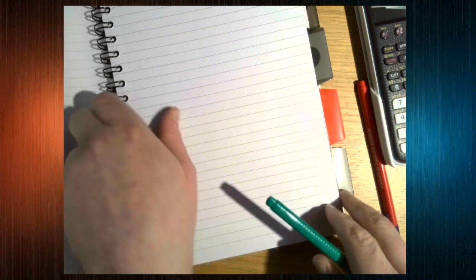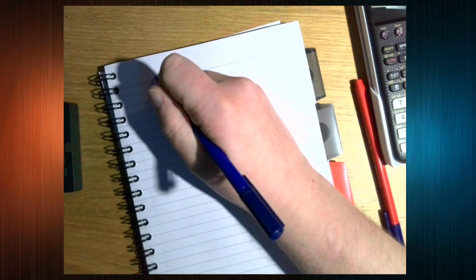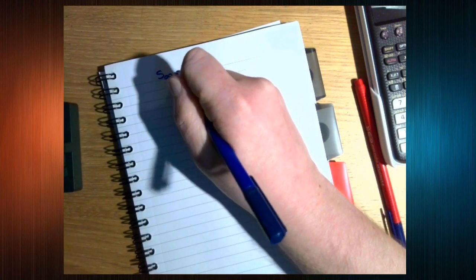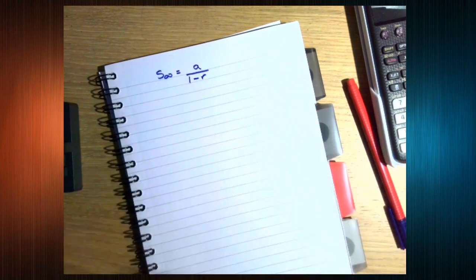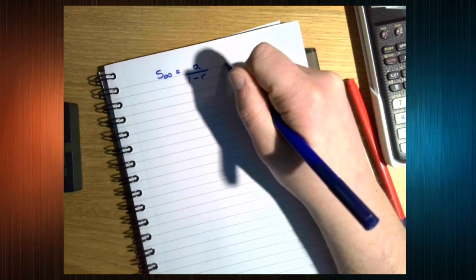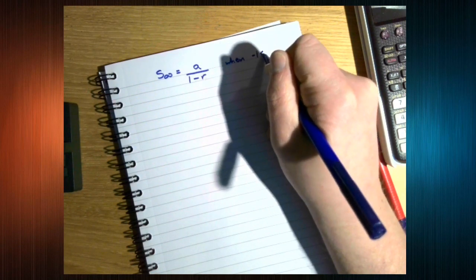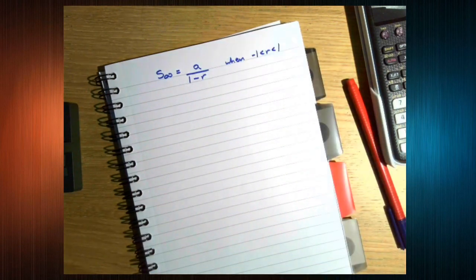So, the formula for the sum to infinity of a geometric series is the first term over 1 minus the common ratio. So, when that is true.